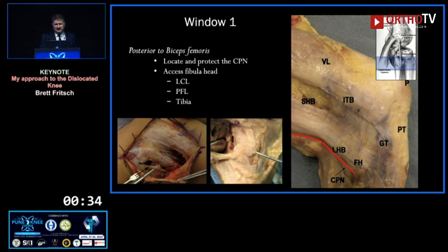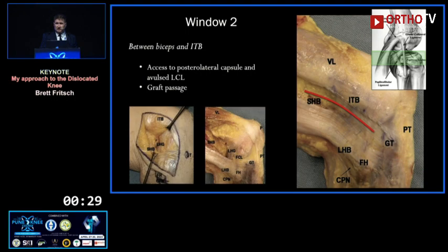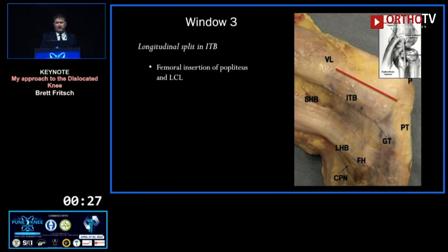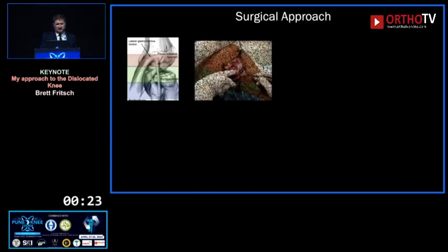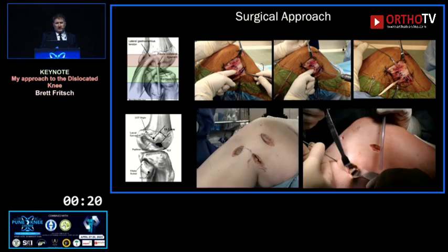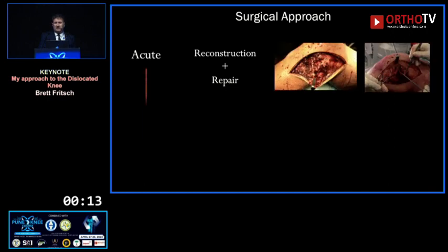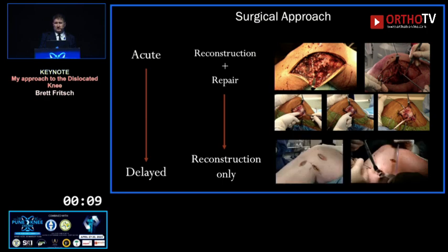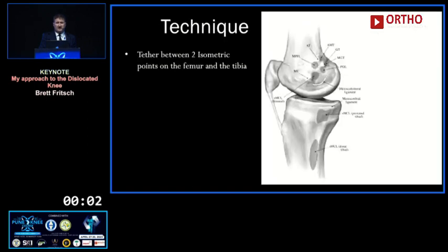The approach changes depending on context. The classic approach uses a large posterolateral flap with three windows: the first, posterior to the biceps, gets you to the common peroneal nerve — which must be dissected and protected — and past your fibula tunnel; the second, between the IT band and biceps, gives access to the joint line; the third, through the biceps and IT band, gives access to the tunnels. You can make this smaller depending on context — in a chronic case doing only reconstruction you can use quite a limited or even percutaneous approach.